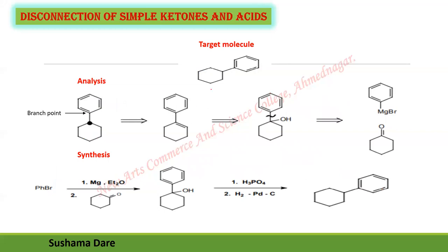In another example with no functional group, we must add one. First, locate the branch point in the molecule. The double bond should be placed near the branch carbon. The newly introduced double bond is also in conjugation with the adjacent ring, providing stability. So always remember: place the double bond at the branch carbon, especially when it is in conjugation. Then ask: is the double bond part of a ring or not?